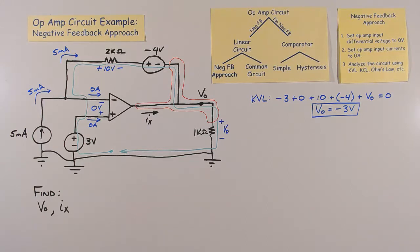Entering from the top, we have 5 milliamps, the same current going through the resistor and voltage source in the negative feedback path. From the op-amp's output, we have IX.